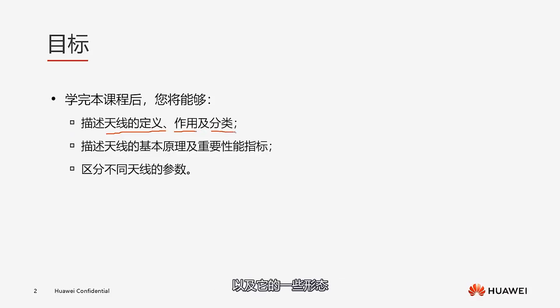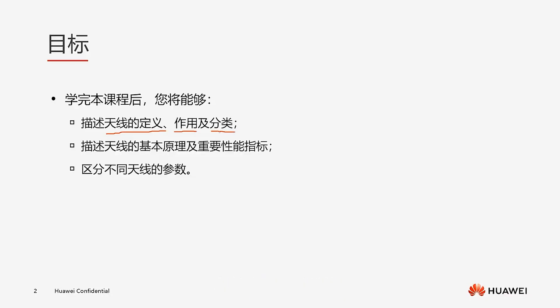After completing this chapter, we should be able to clearly define what an antenna is — what kind of device it is and what role it plays. We will also learn about its various forms, including its directionality and how it can be categorized by polarization method, shape, and other aspects. We also need to describe the basic working principle of antennas, including how they generate electromagnetic waves and under what circumstances electromagnetic wave generation is most effective.